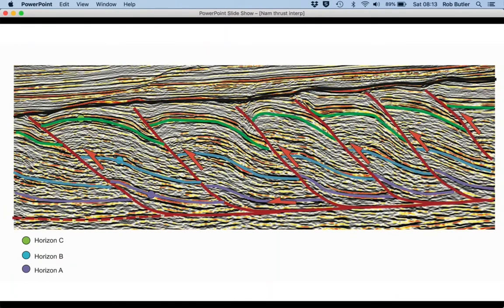And you'll see we've got an array of thrust faults that are climbing off that common floor thrust, the major detachment at the base, repeating the stratigraphy several times. Each one of these splays is a thrust in its own right, repeating stratigraphy, carrying older rocks on top of younger, moving the hanging wall up relative to the footwall.